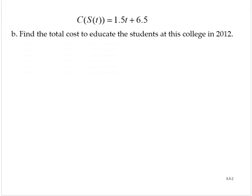Part B asks us to find the total cost to educate the students at this college in 2012. Well 2012 is 12 years since 2000, and since t was the number of years since 2000 that would imply that for this exercise t is 12.